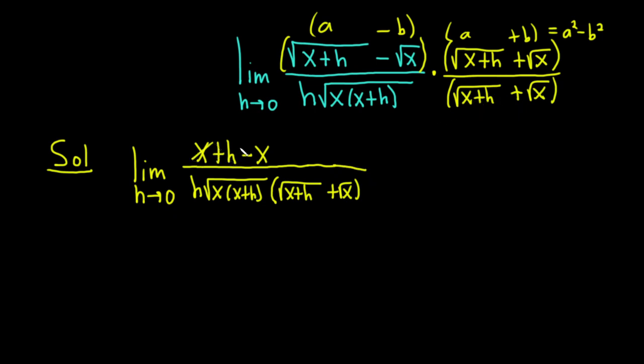And so now the x is cancelled. This is equal to the limit. It's important to always write the limit sign until you actually plug in the 0. And we have h over all this stuff on the bottom. So it's h square root x parentheses x plus h, then parentheses square root x plus h plus the square root of x with another parentheses. So big mess on the bottom. Boom, these go away.